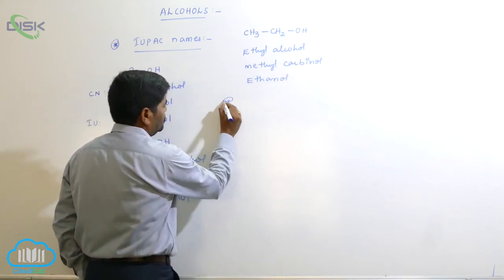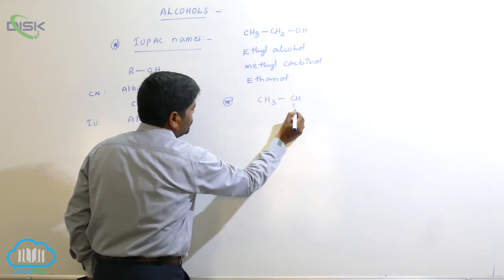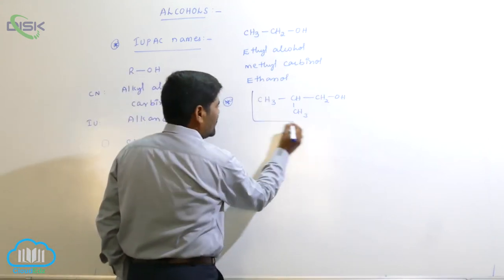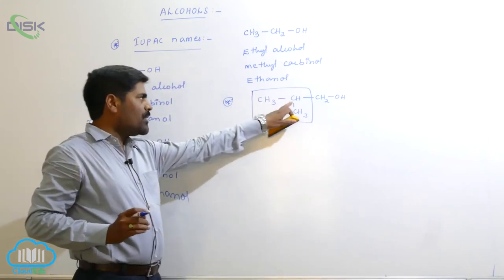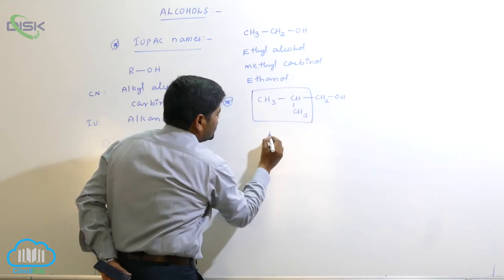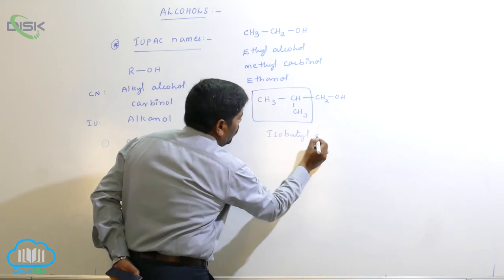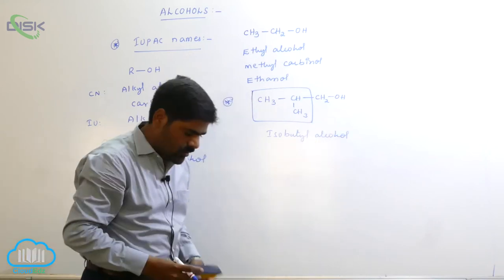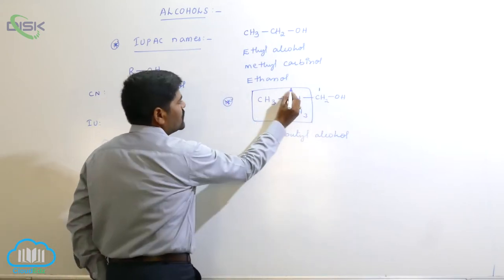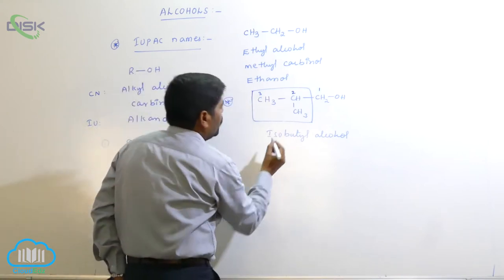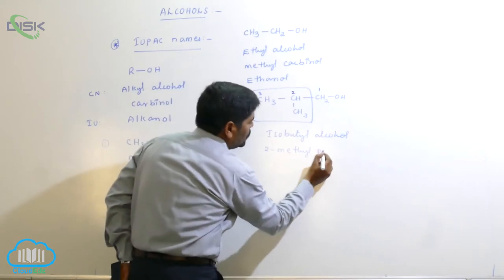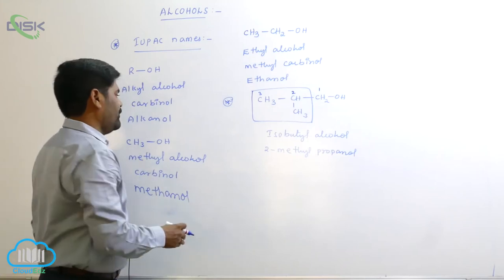Next: CH3-CH(CH3)-CH2OH. If a single carbon contains two methyl groups and one hydrogen, that system is known as 'iso'. So this is known as isobutyl alcohol. For the IUPAC name, numbering always starts from the functional group carbon: 1, 2, 3. There are three carbons in the straight chain, and a methyl substituent at carbon 2, so the IUPAC name is 2-methylpropanol.